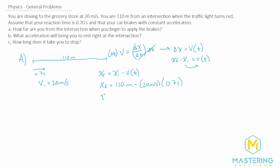So x_final will be 96 meters from the stoplight when we very first start to brake. Another way you could have done it, which gives the exact same answer, is to say delta x equals velocity times time — so 20 meters per second times 0.7 gives you 14, and then 110 minus 14 gives you 96. Either way is fine; we're just saving a little time by using the combined formula.